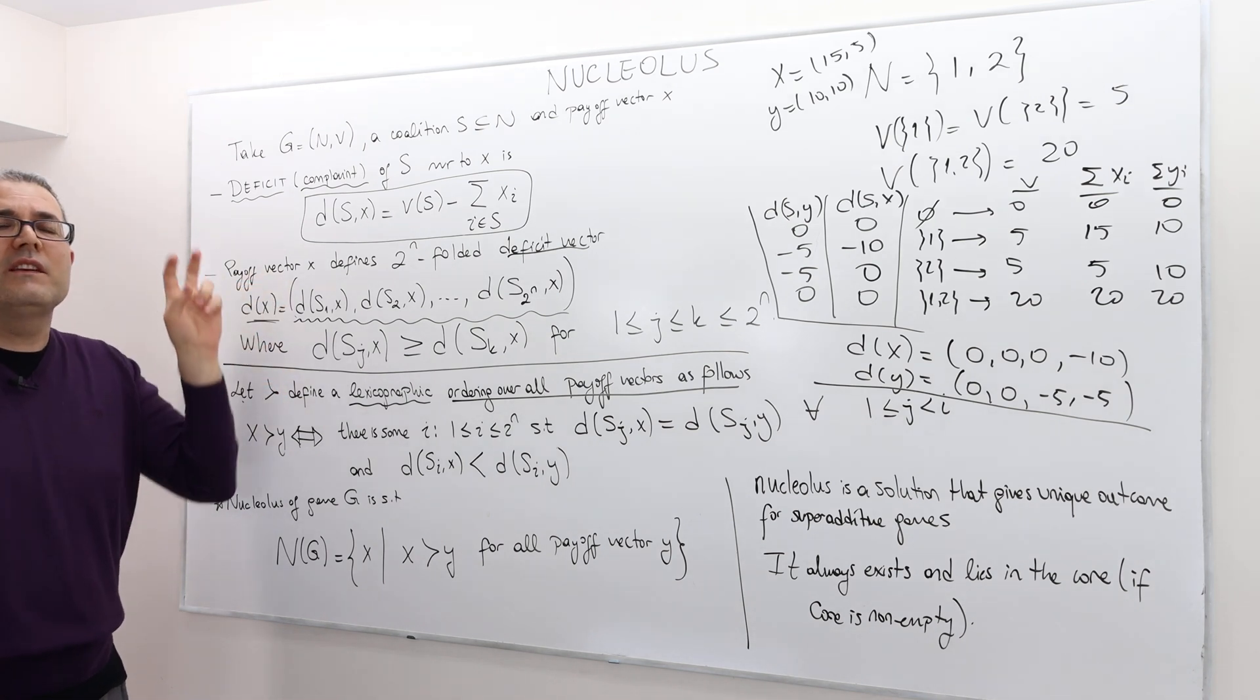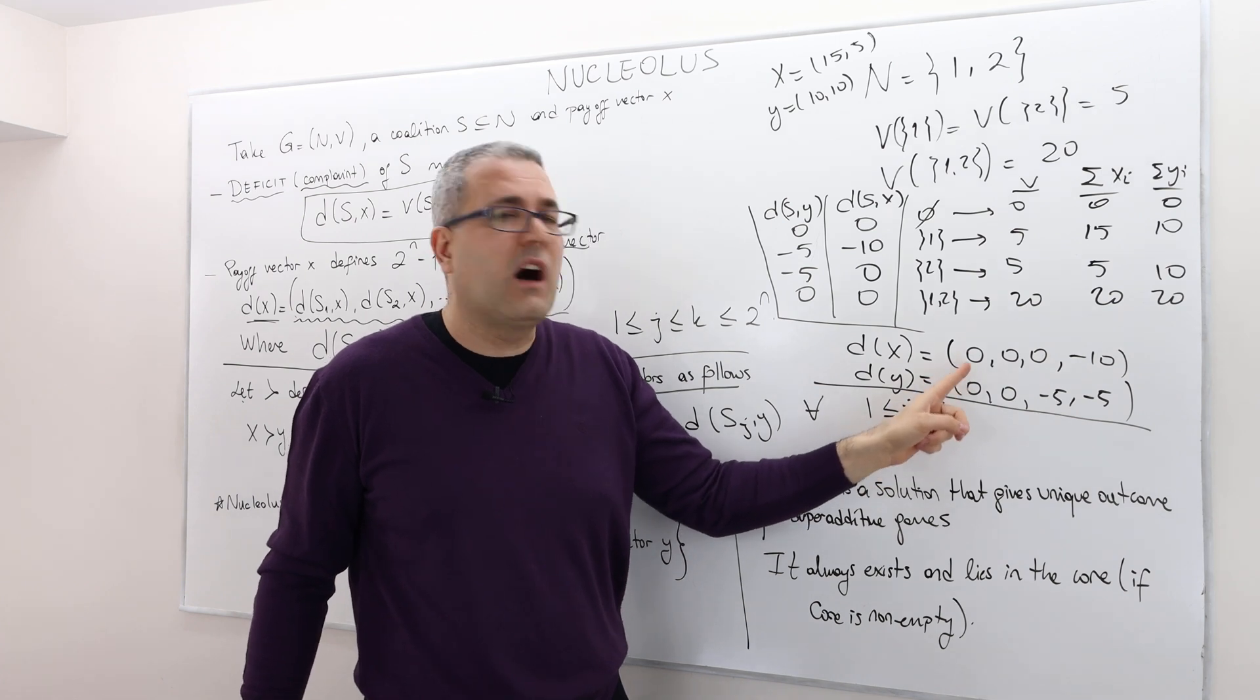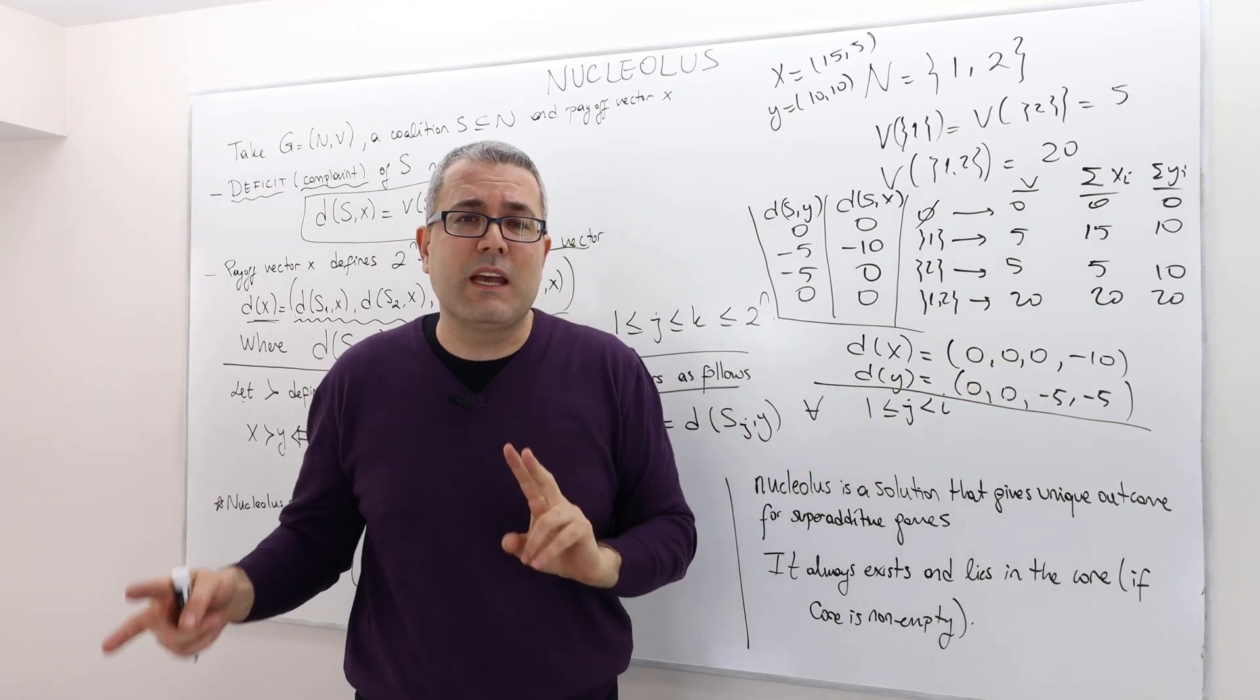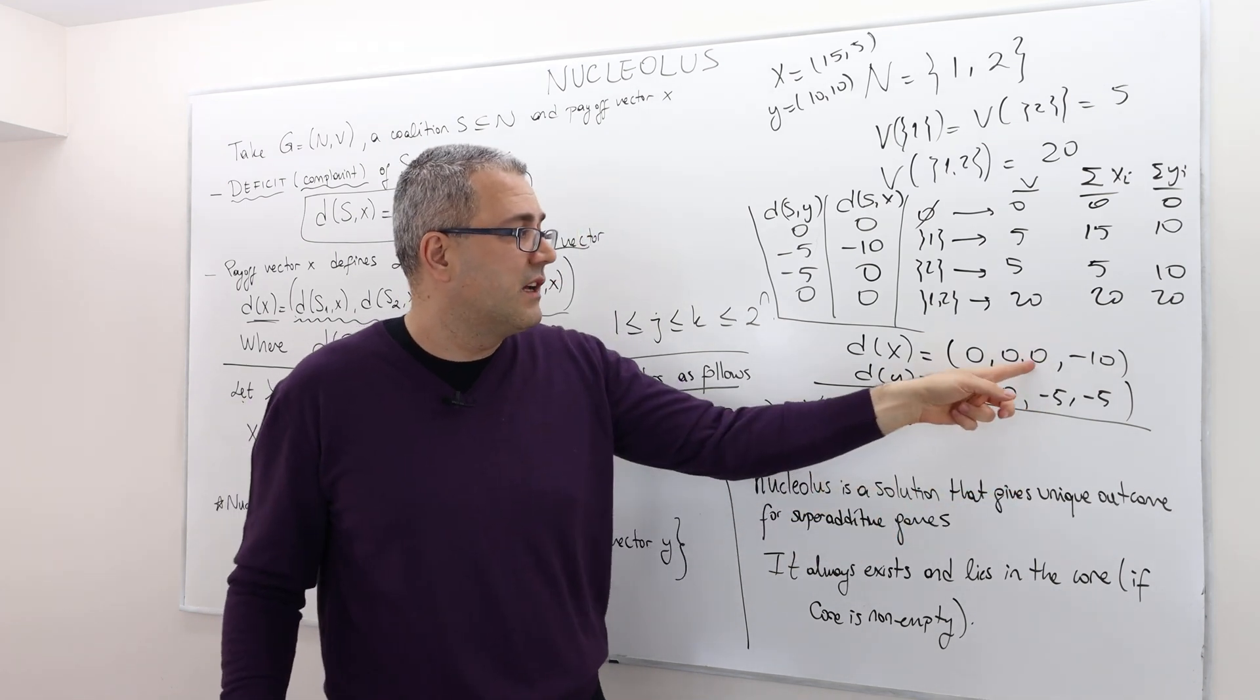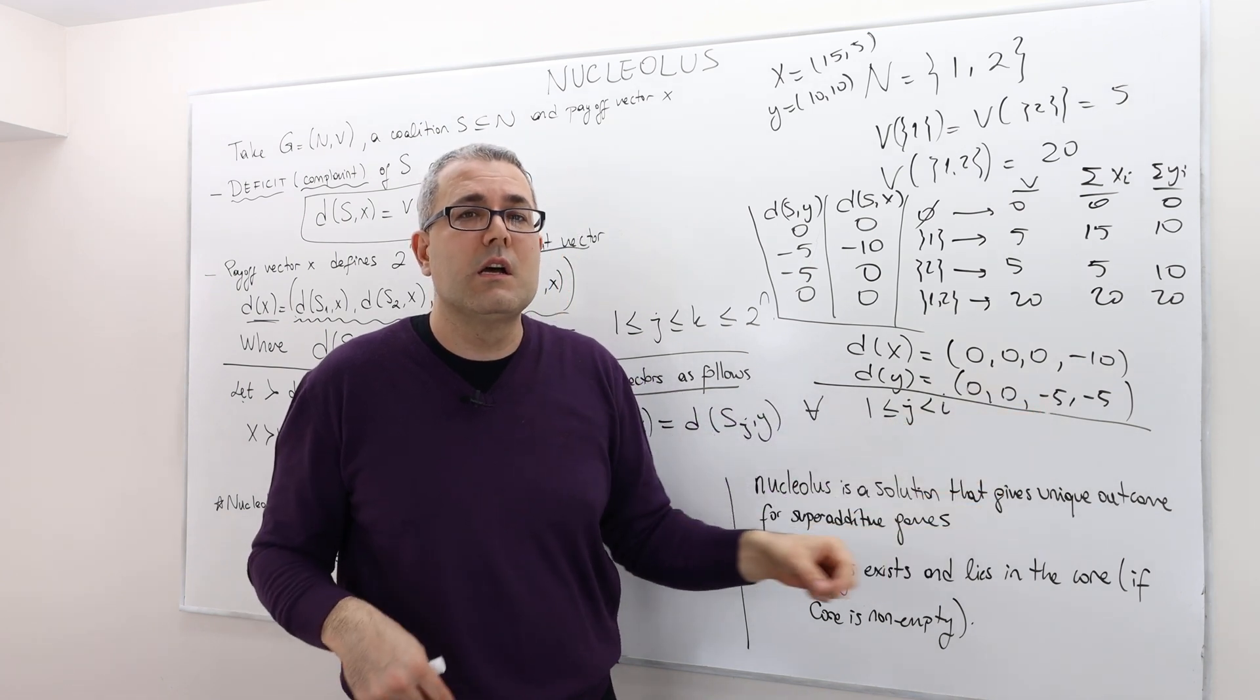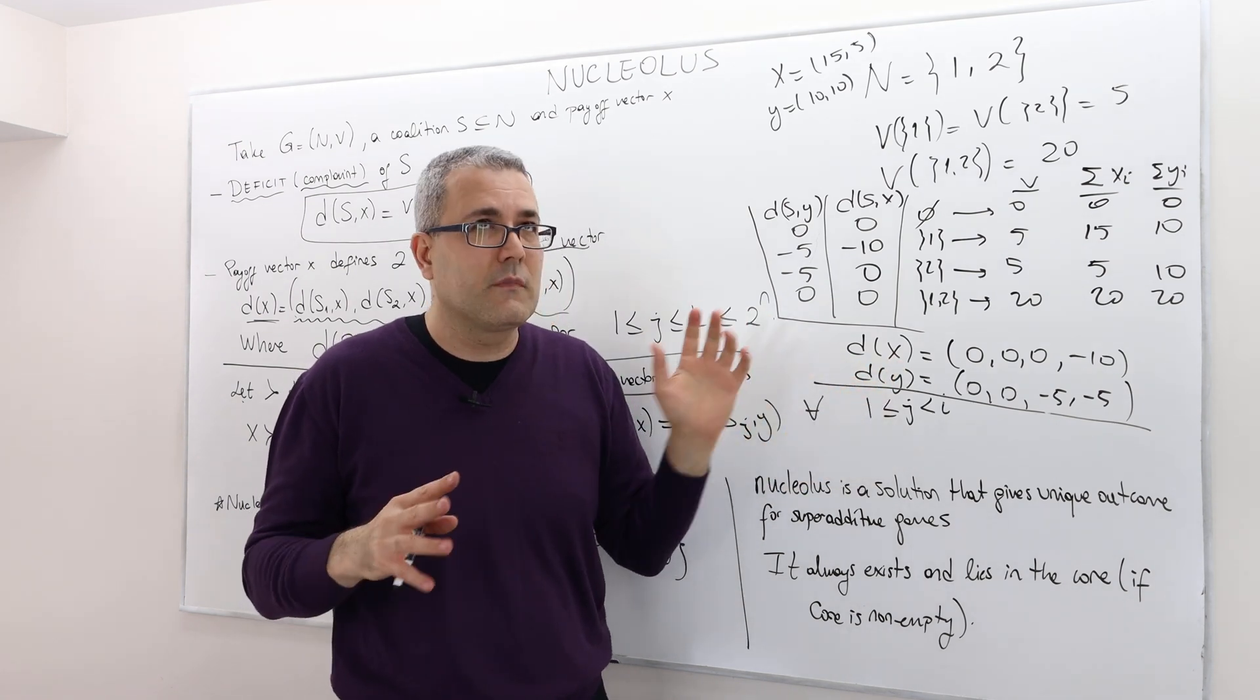I rank the highest complaint from the highest complaint to the lowest complaint, and then compare two deficit vectors in a lexicographic way. I look at the highest possible complaint. The highest in each dx and dy. The highest are the same. Then move on to the second highest. The second highest complaints. The same. Move on to the third highest. So here i is three. The third highest. The complaint under x is higher than complaint under y.